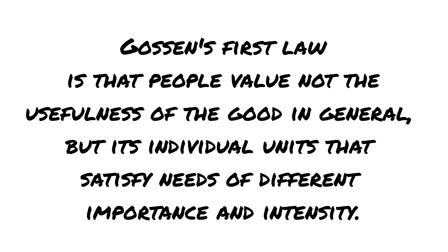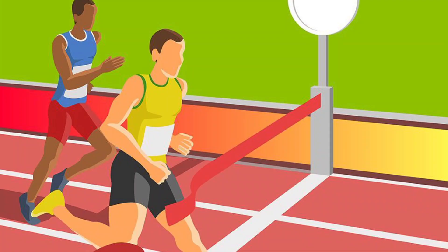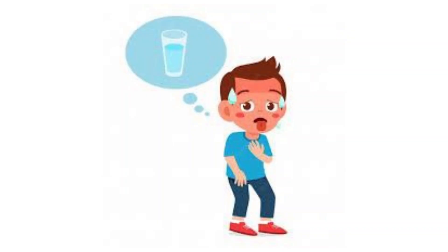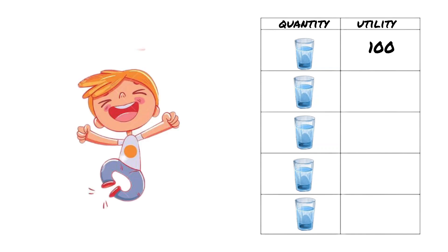Let's consider the third option in more detail. Imagine that you have finished training. Today is a very hot day, and you are thirsty. You have 5 glasses of water. So, the first glass of water has a marginal utility of 100 units, that's an arbitrary value.